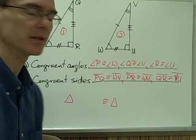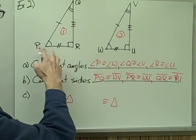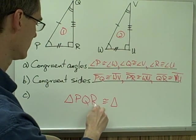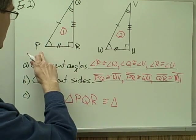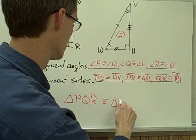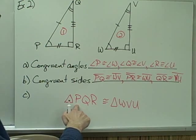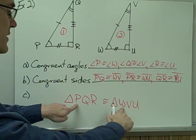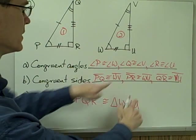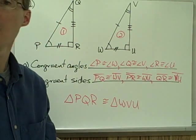All I need to do now is write my congruence statement with my triangle vertices in the correct order. Triangle PQR is congruent to triangle WVU. I can double check: angle P and angle W are in the same position — P and W are congruent. Q and V are in the middle — Q and V are congruent. R and U are at the end — R and U are congruent.